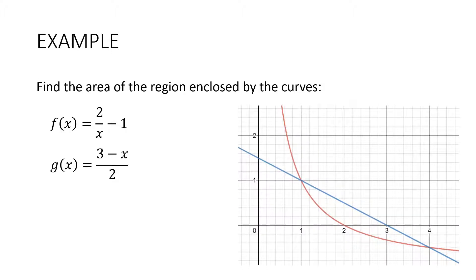Here's another example: find the area enclosed by f(x) equals 2 over x minus 1 and g(x) equals (3 minus x) over 2. You might worry about the area dipping below the x-axis, but between two curves you don't need to worry about that. If you add a constant to both functions and shift the area up, you get the same answer. You only need to worry about sign when finding area between one curve and the x-axis.